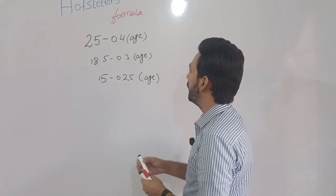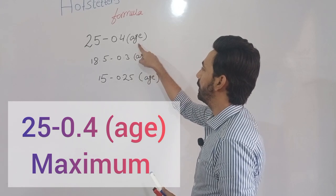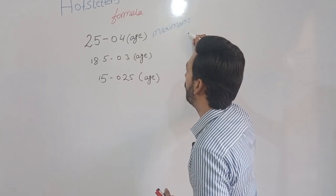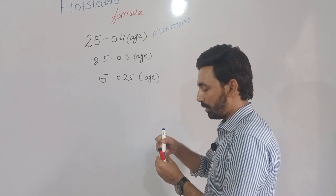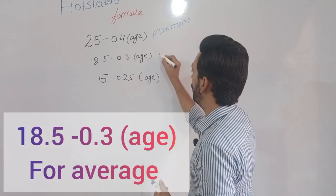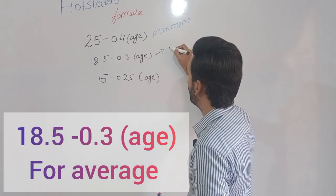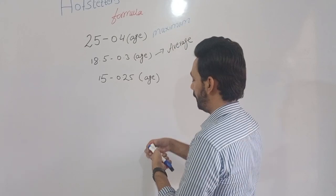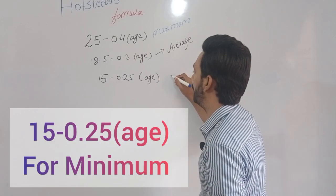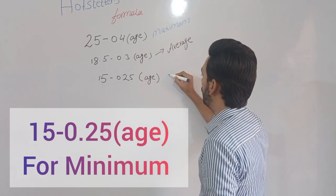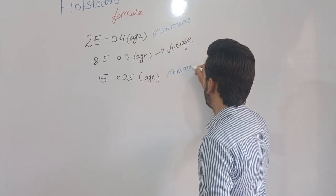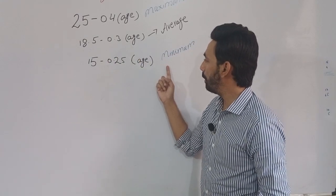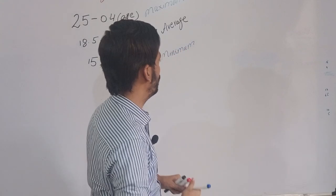We have three different formulas. For maximum amplitude of accommodation, the formula is: 25 minus 0.4 times age. For average amplitude of accommodation at any specific age, a different formula applies. And for minimum amplitude of accommodation at any age, there is a third formula. We will now find maximum, average, and minimum amplitude of accommodation for a patient aged 40 years.